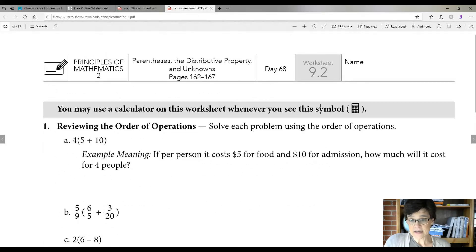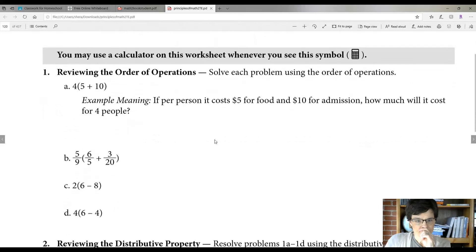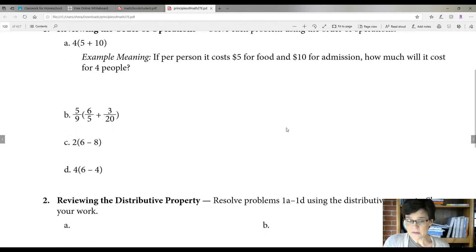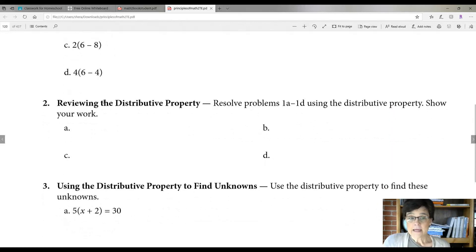So let's take a look at the worksheet and see what we're doing here today. Worksheet 9.2. It's front and back. Now, number one, a through d. It's just reviewing the order of operations. It's got parentheses. You're just doing the order of operations. Normal. Obviously, do what's in parentheses first. Remember when you add fractions, they have to have common denominators. Don't forget that.